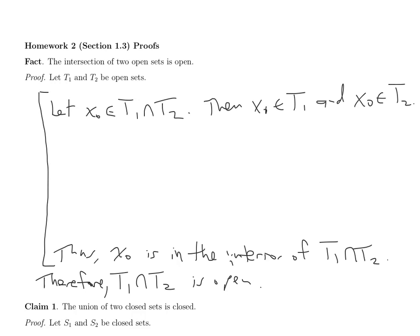What I know about T1 and T2 is that they're open. Since X0 is in T1 and T1 is open, that means X0 is interior to T1. So there's an epsilon — let's call it epsilon 1 — such that the neighborhood (X0 minus epsilon 1, X0 plus epsilon 1), the open neighborhood centered at X0 with radius epsilon 1, is completely contained in T1.